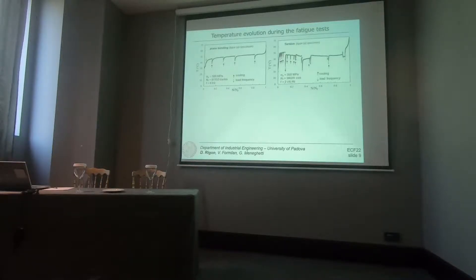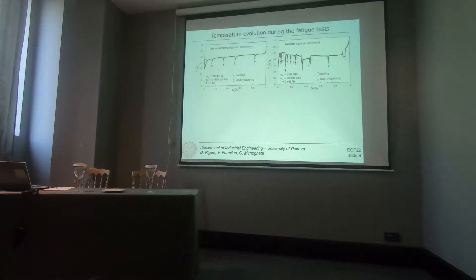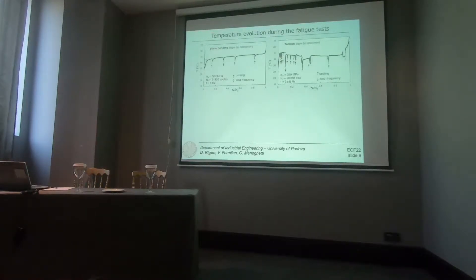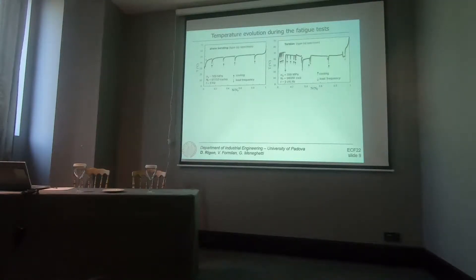Let's take a look at the temperature evolution during the tests. For plane bending, we see the common temperature trends already shown in the introduction, and you can observe several test stops performed to evaluate the Q-parameter. This is representative of a fatigue test conducted at a constant load frequency of 8 Hz. For torsion, the trend differs from plane bending because we set different load frequencies along the total fatigue life, so temperature stabilization occurs at different levels.